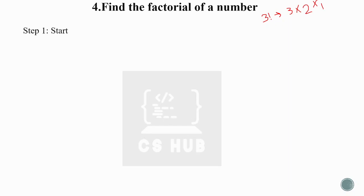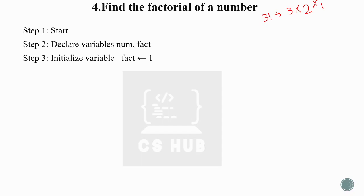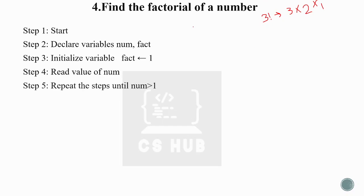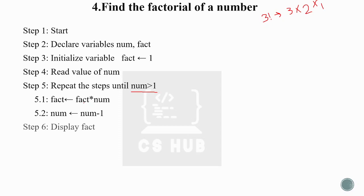Algorithm for factorial: Start. We have two variables. Initialize fact equal to 1, then read the value of num. Repeat the steps until num is greater than 1: fact equals fact star num, then decrement num by 1. After the loop, print fact, then stop.